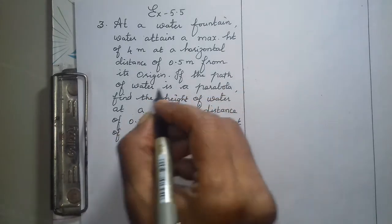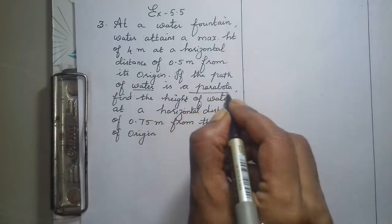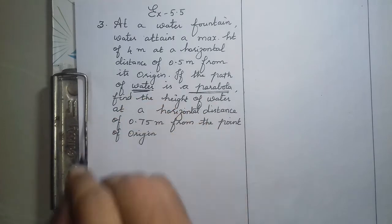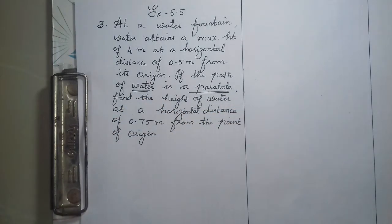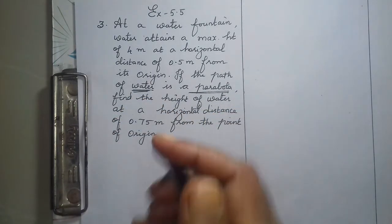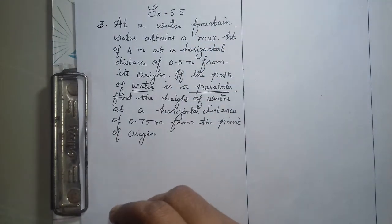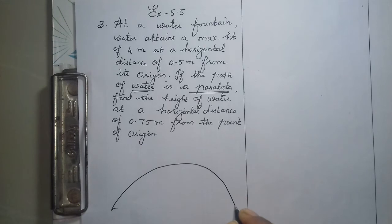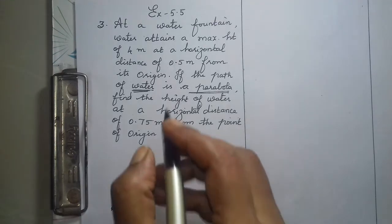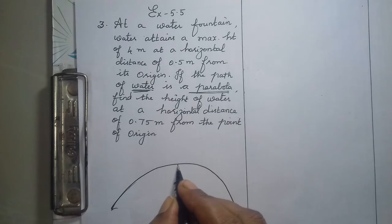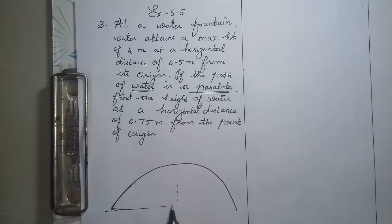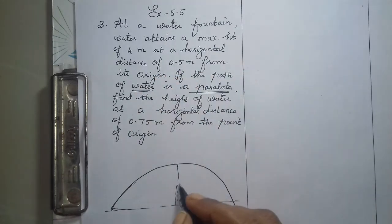Observe this question — the water makes a parabolic path. Water fountain. Let's draw a parabolic path. This is a parabolic path. The maximum height it reaches is — say this is ground level — the maximum height it reaches is 4 meters. So this is 4 meters.